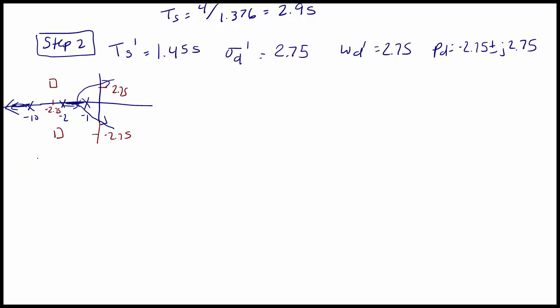For step 3, we are going to calculate PS. PS is the sum of the angles from all of the open loop transfer function poles and zeros to our desired closed loop poles. First, the angle from the pole at -1 to Pd is 180 - arctan((2.75-0)/(2.75-1)) = 122.47 degrees. Then the angle from the pole at -2 to Pd is 180 - arctan((2.75-0)/(2.75-2)) = 105.26 degrees.